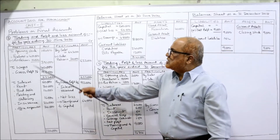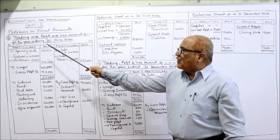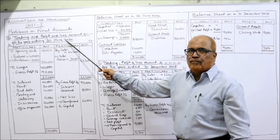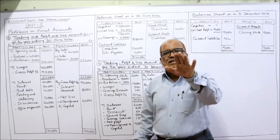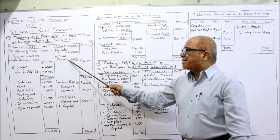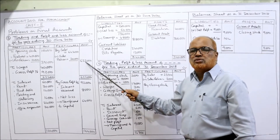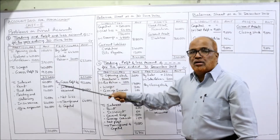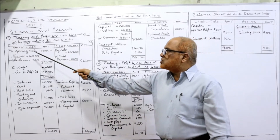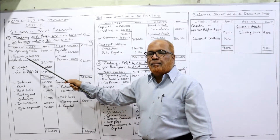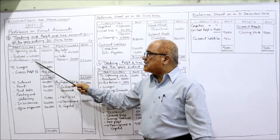Now see the solution. Trading and profit and loss account for the year ended 30th June 2020. Credit side: sales are six lakh forty-two thousand. From sales, deduct the sales return of twenty thousand — you get six lakh twenty-two thousand. There is no closing stock; this is the first problem where closing stock is not given. Opening stock is one lakh. Purchases are four lakh, minus purchase returns of ten thousand — net purchases three lakh ninety thousand.